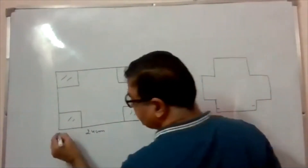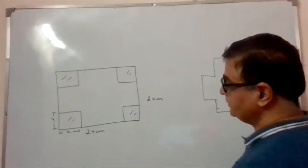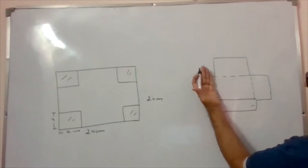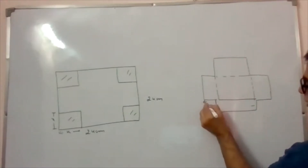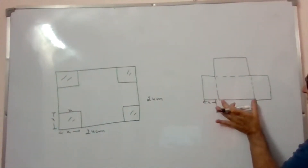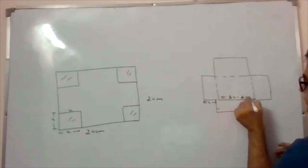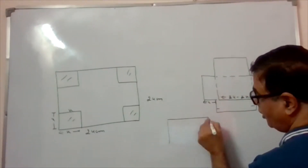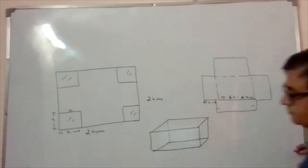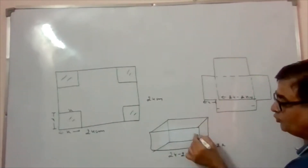Let x be the side of each square to be cut. When you cut and fold, x becomes the height of the box. The total sheet length is 24, so if you cut x from each side, the base becomes 24 minus 2x on each side.